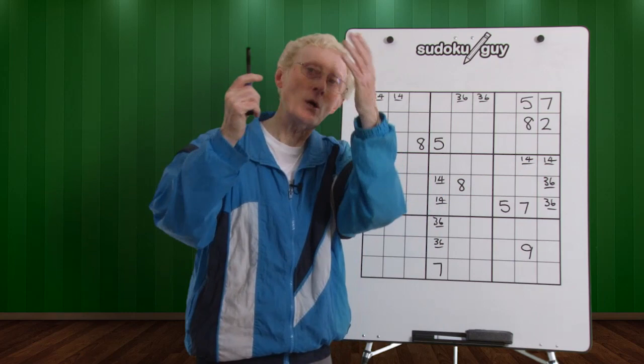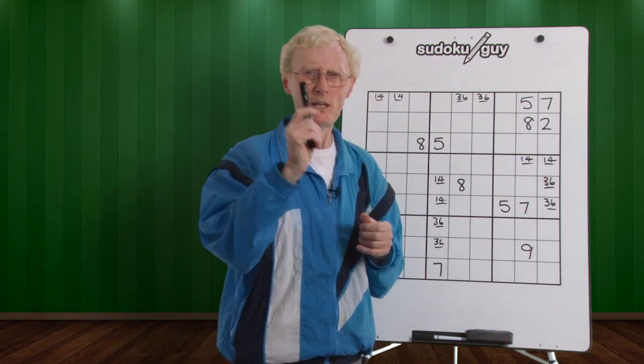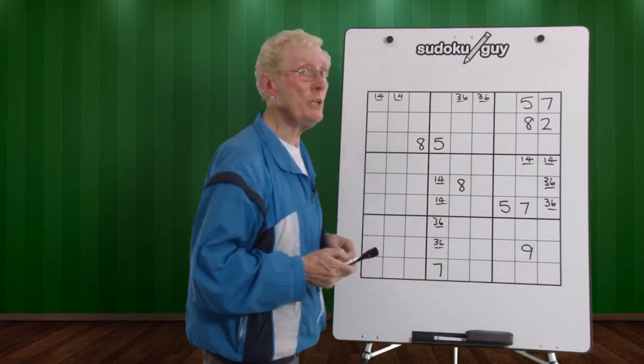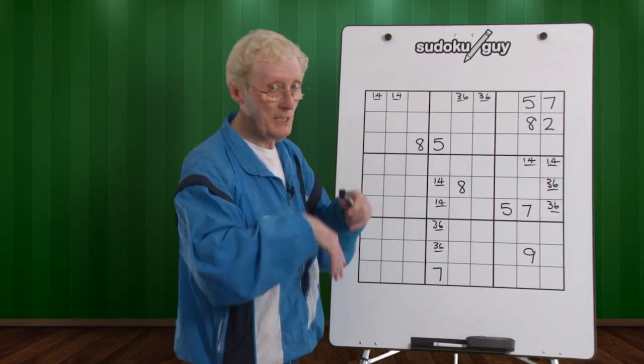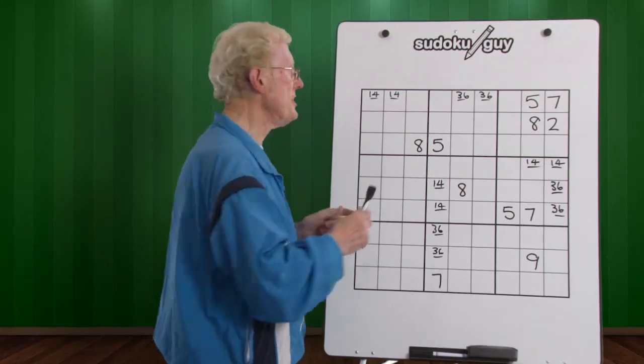As you get further on in the course, you're going to get lots of matching pairs, and that will be really helpful. Remember, if I've underlined them, that means that only those two numbers can go there. No other numbers, so you don't need to clutter it up with extra numbers. Let's take, first of all, this top line.